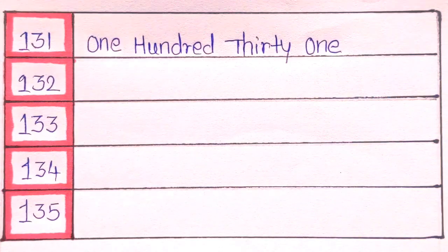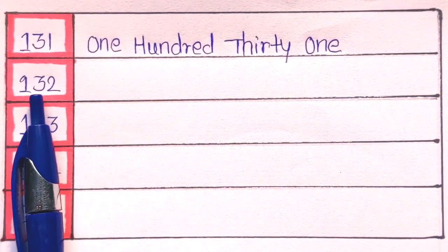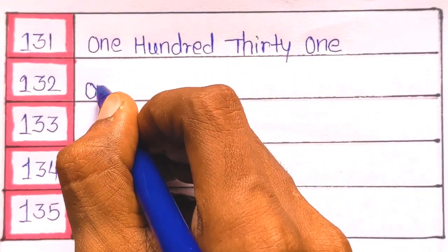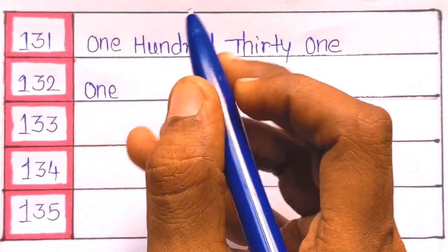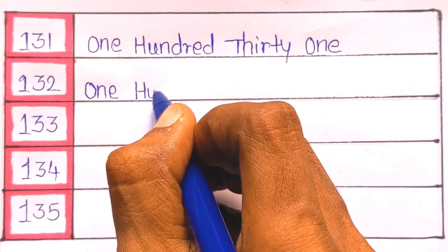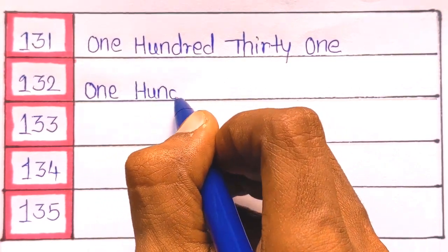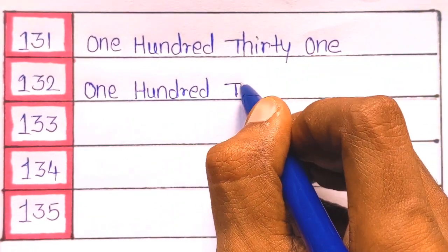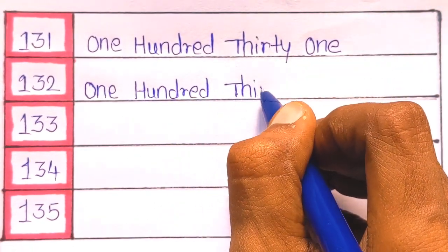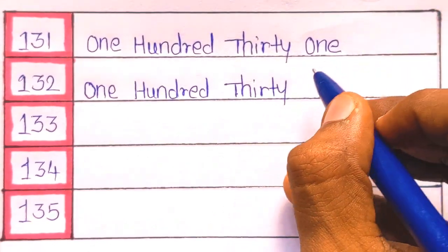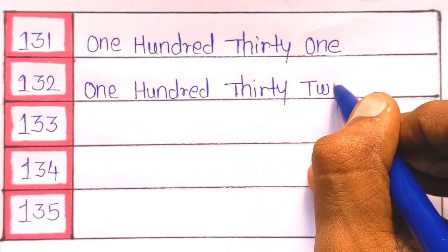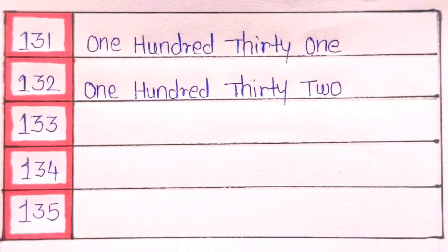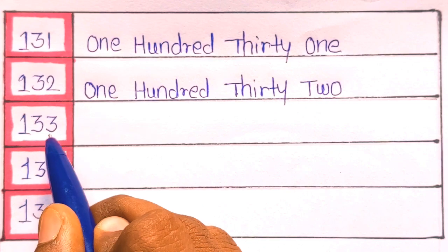Next it's 132. It's 132. O-N-E hundred, H-U-N-D-R-E-D, one hundred thirty, T-H-I-R-T-Y, thirty two, T-W-O. 132.